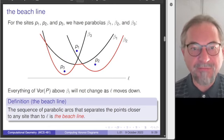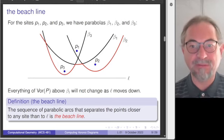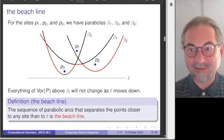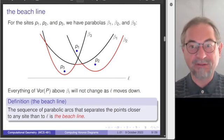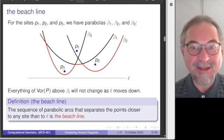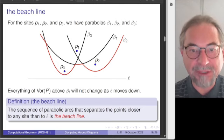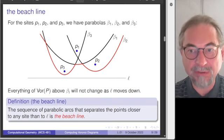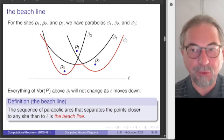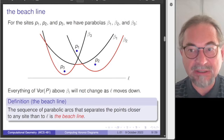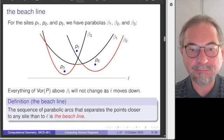Here is the notion of the beach line. For each site we define the parabola with the sweep line as directrix — all concave-up parabolas. We have this sequence of parabolas defining the beach line. The beach line is drawn in red: it consists of those points on the parabolas that are closest to the sweep line. Some of the points on the beach line are intersections of parabolas, but not all. The important invariant: everything of the Voronoi diagram above the parabola does not change as we move down.